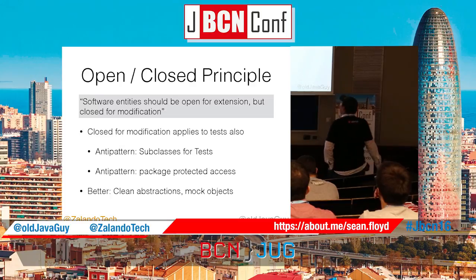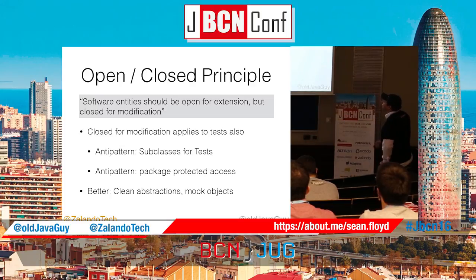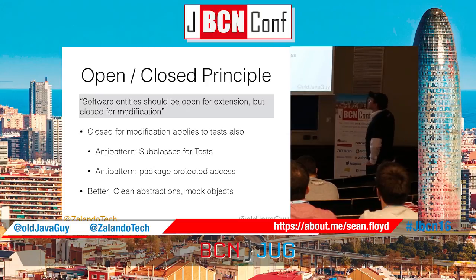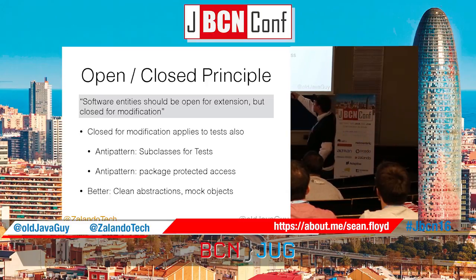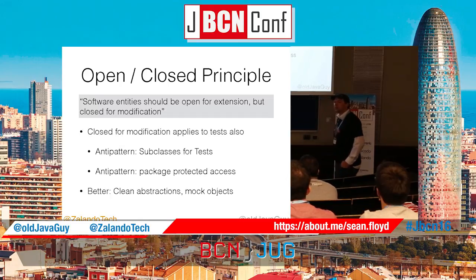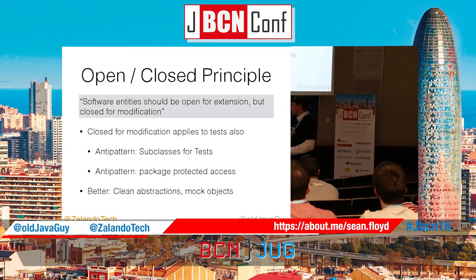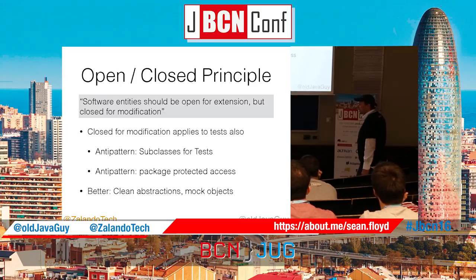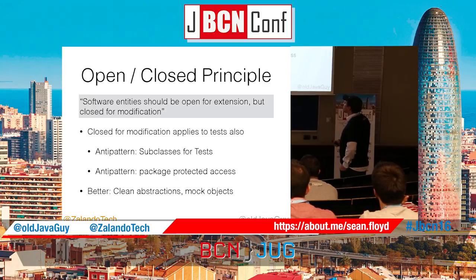So this is an anti-pattern: subclassing for tests. The next anti-pattern is making package-protected access. This is arguable — I wouldn't say it's a strong anti-pattern, it's a weak one, and I actually do that sometimes myself. Making a method package-protected because the test class is in the same package means you can call the method even though it's not publicly accessible. It's not perfect, but sometimes it's an acceptable workaround.